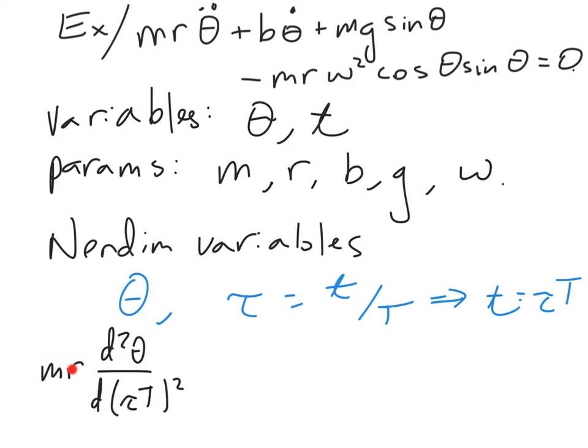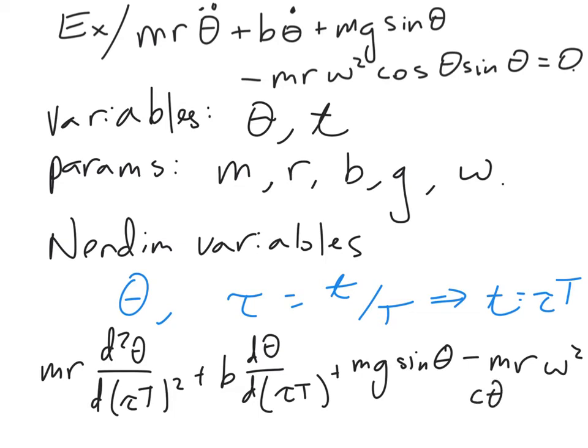So mr d²θ/dt², but little t becomes tau T, plus b dθ/d(tau T), plus, the other terms don't change because theta hasn't changed and there's no time in them. So minus mr ω² cos θ sin θ equals zero.